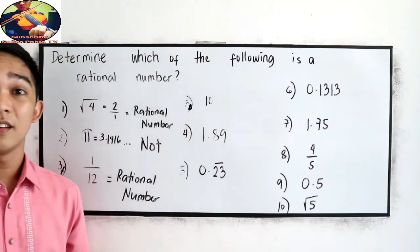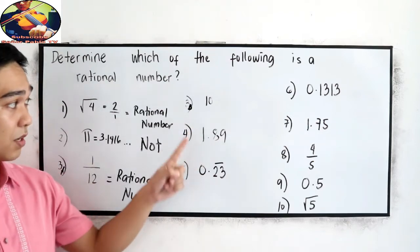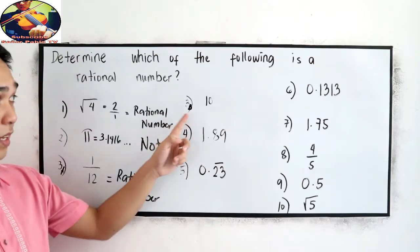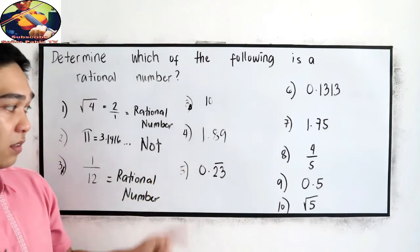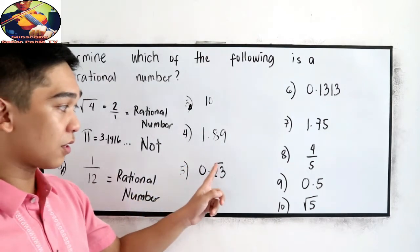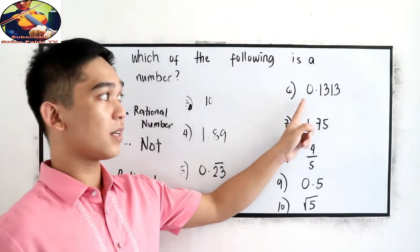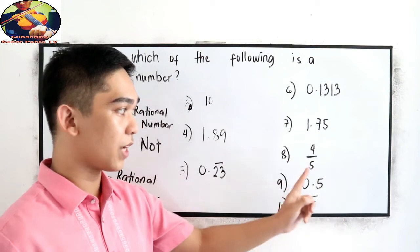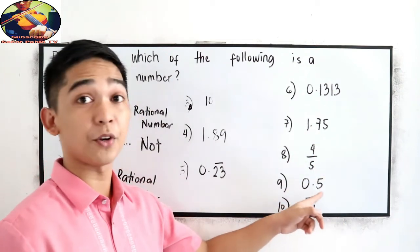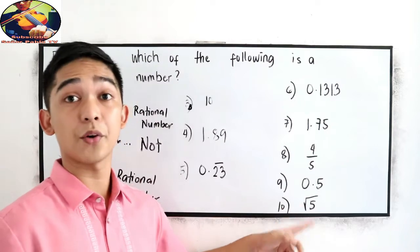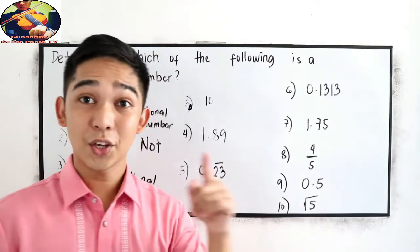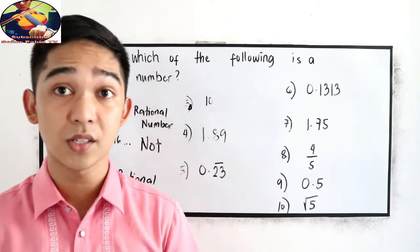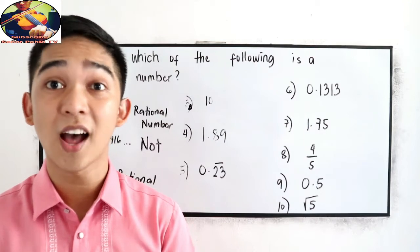Now it's your turn to answer numbers 3b to 10. Number 3b is 10; number 4 is 1.89; number 5 is 0.23 with a bar; number 6 is 0.1313; number 7 is 1.75; number 8 is 4 over 5; number 9 is 0.5; and number 10 is square root of 5. If you want to answer, you can pause the video, then resume to check your answers.